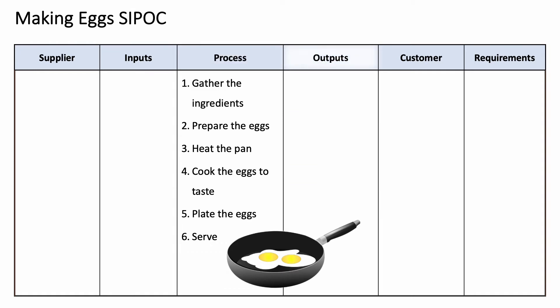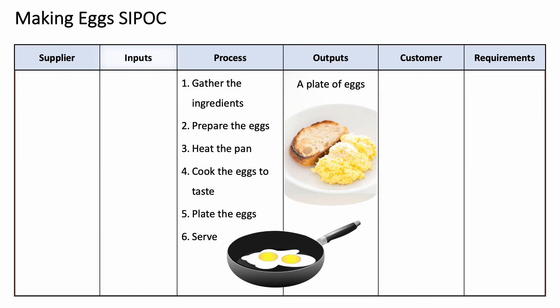The output of my process is a plate of eggs. In order to ensure I'm doing this properly, I need to make sure I have all the right ingredients — that's what the inputs are. I need everything necessary to make the process work. So my inputs here are: eggs, butter, pan, stove, spatula, seasonings, and ketchup.